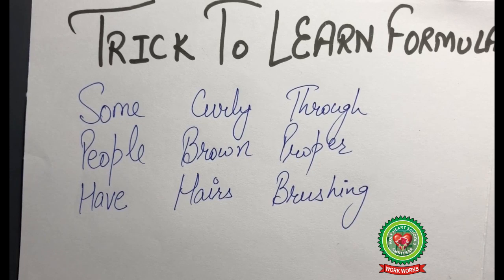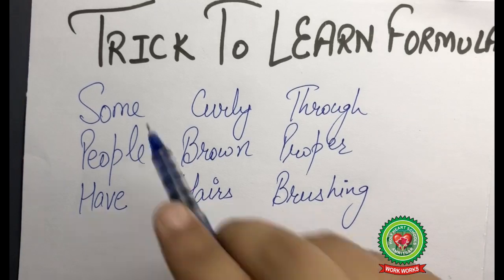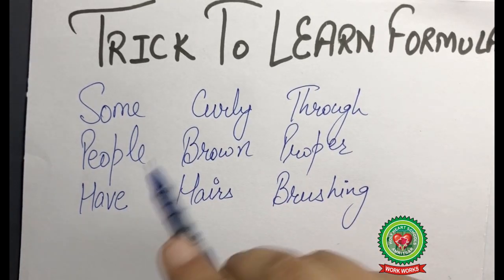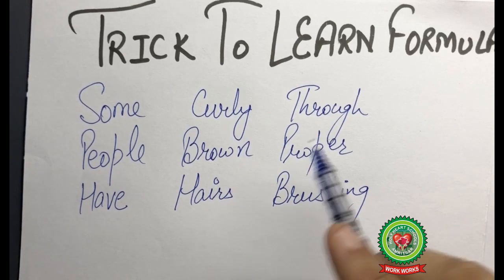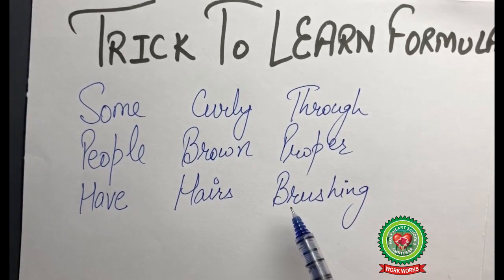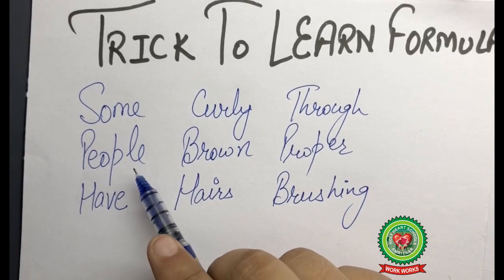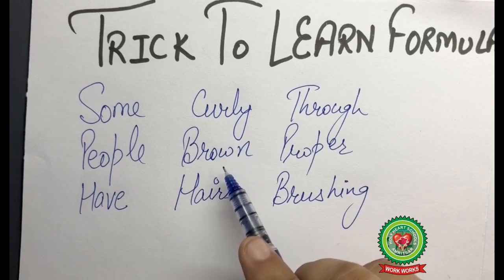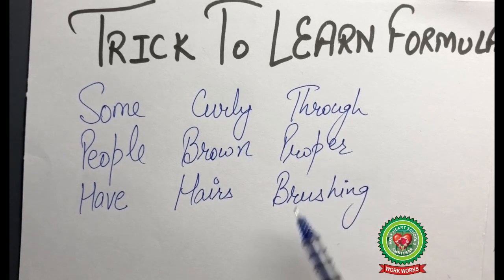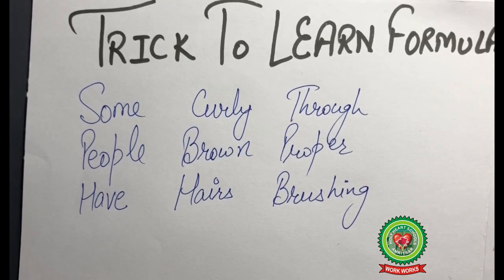Now I am going to give you a trick to remember the formulas. We are going to remember this line which will help us in remembering all the six trigonometrical ratios. The line is: 'Some people have curly brown hairs through proper brushing.' I will repeat it once again: 'Some people have curly brown hairs through proper brushing.'